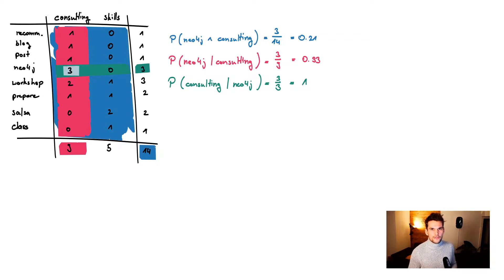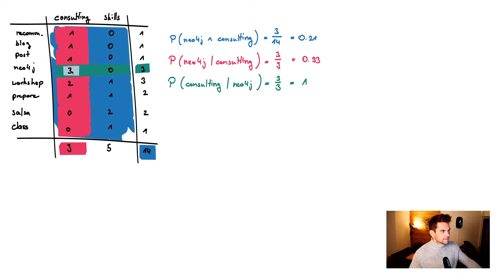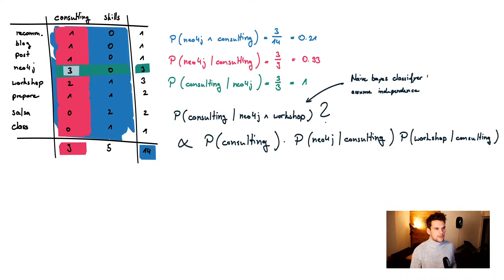We can also do the reverse: given the term 'Neo4j', what's the probability for seeing the area 'consulting'? So the user types 'Neo4j' — what's the probability for each area? We select only the Neo4j row, so we have three assignments in consulting and zero in skills. The probability for consulting given Neo4j is 3 over 3, which is 1, and for skills it's 0 over 3, which is 0.